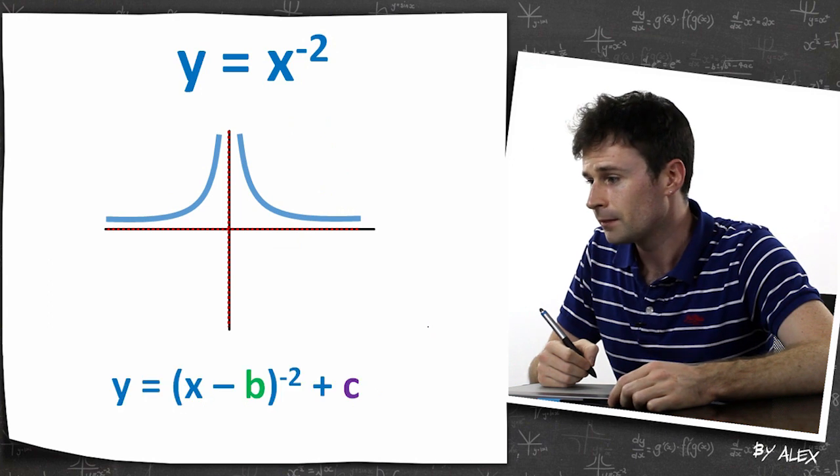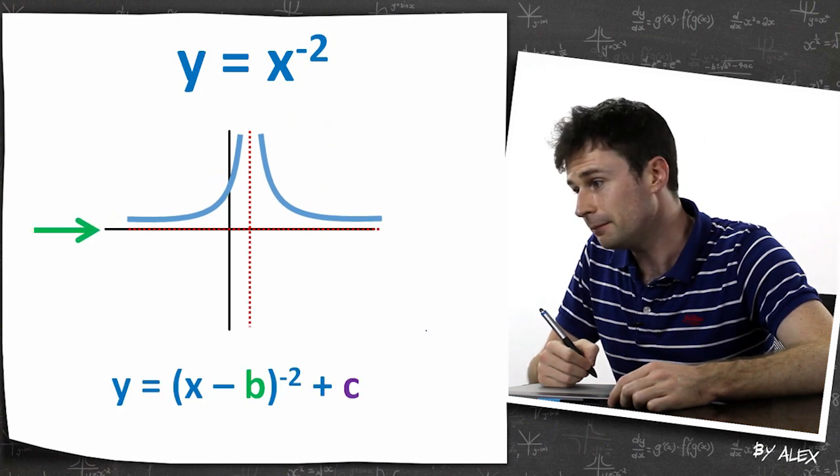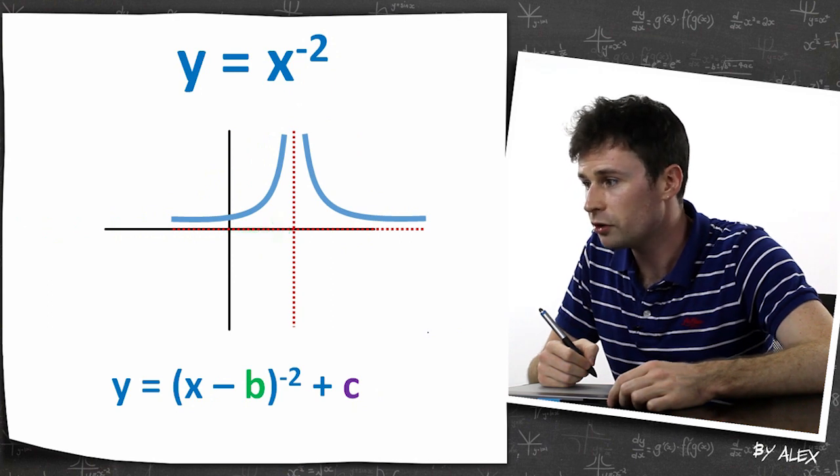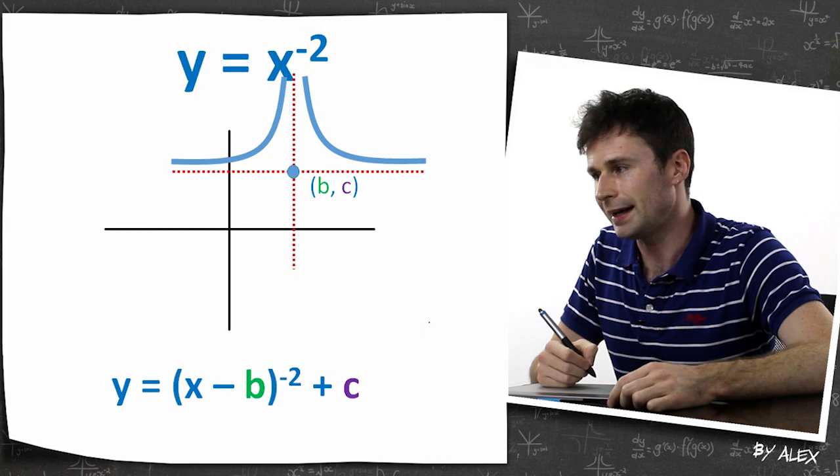Same deal with this bad boy. Say I wanted to move it negative, I wanted to move it b. So that would be a b amount, and that would be a c amount. So whatever it is, that point would be b, c.